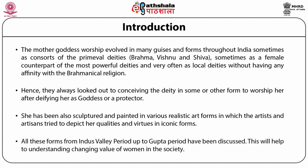All these art forms from the Indus Valley period up to the Gupta period have been discussed. This will help in understanding the changing value of women in society. We have various art forms to study, categorized into four parts: stone sculpture from Indus Valley to the late medieval period; terracotta from Indus Valley to the present; women carved on monuments, stupas and temples; and lastly, paintings — from prehistoric era, Ajanta paintings and miniature paintings, followed by modern paintings.